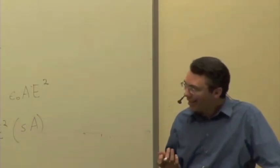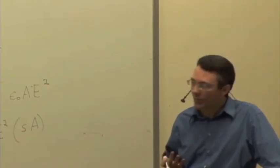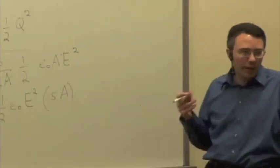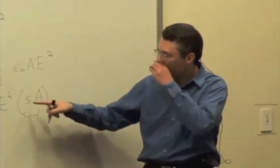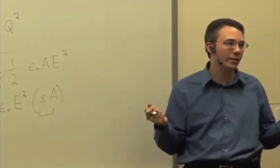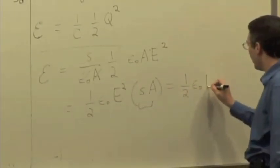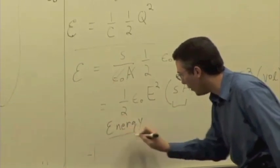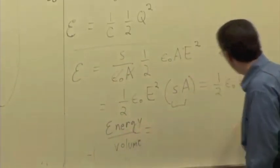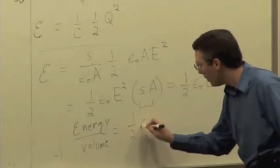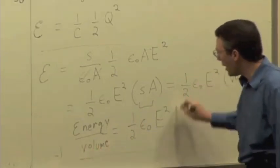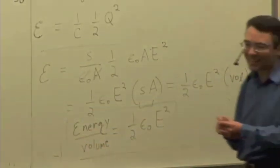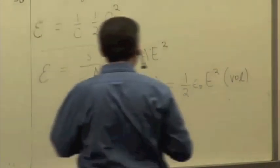This suggests that energy is stored actually in the fields themselves. Now S times A — the distance between the plates times the area — gives the volume of the space inside the capacitor. So the energy is one half epsilon zero times E squared times the volume. And if I divide through by the volume to get energy per unit volume, I get one half epsilon zero E squared. This turns out to be a general formula, and this is the energy density for an electric field — energy per unit volume.